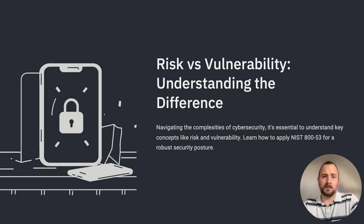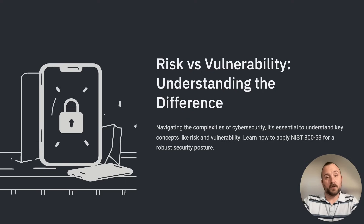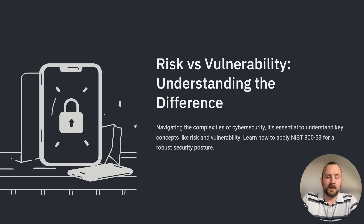We have a risk metrics you can use — the likelihood of high and low, and your impact of high and low. A high-low matrix can help an organization evaluate the level of risk associated with a particular vulnerability. If both likelihood and impact are high, it's considered a critical risk. For example, if the likelihood is low — only 10% chance of exploitation — but the impact is high, a potential loss of a million dollars, it's still considered a moderate risk.